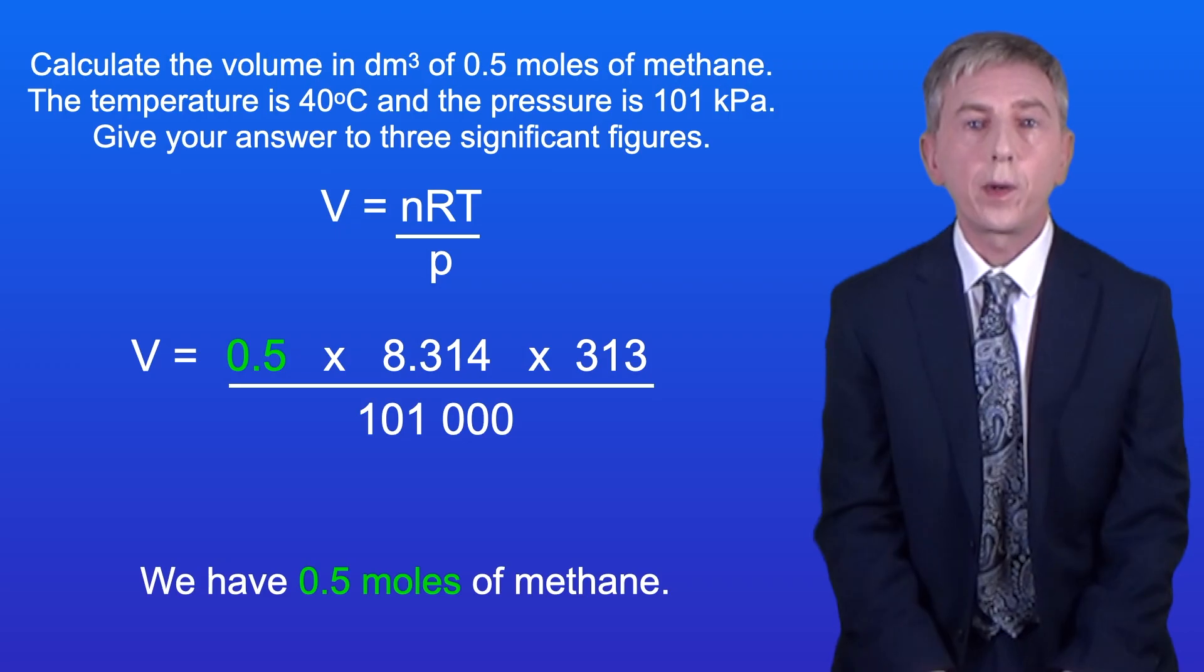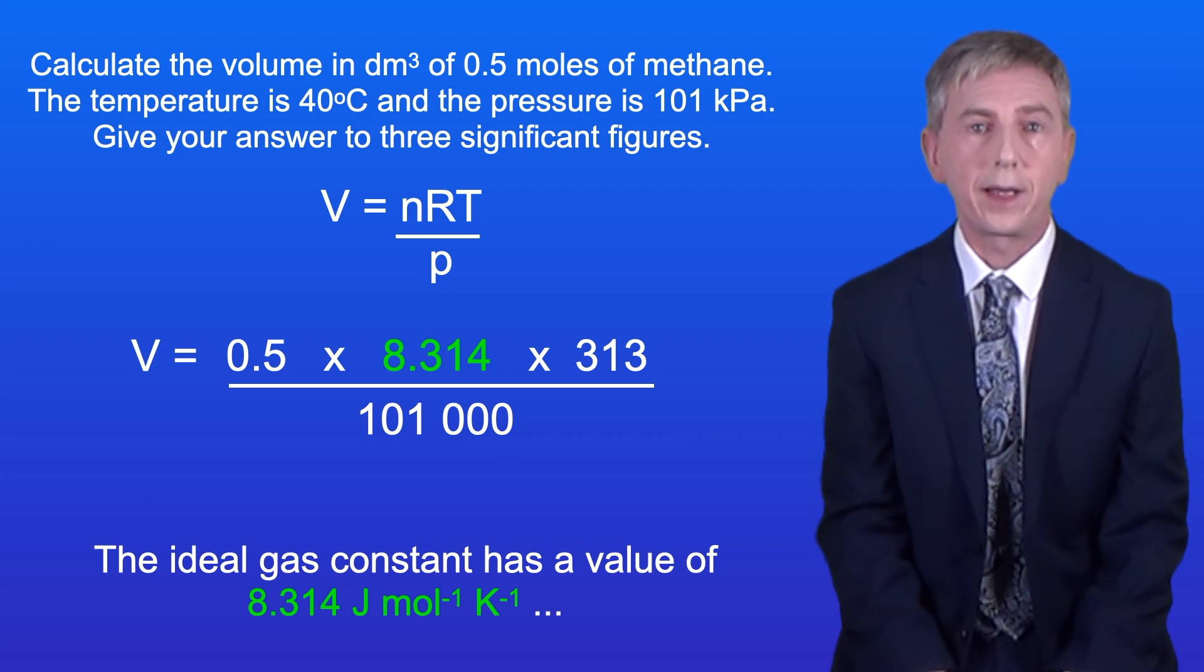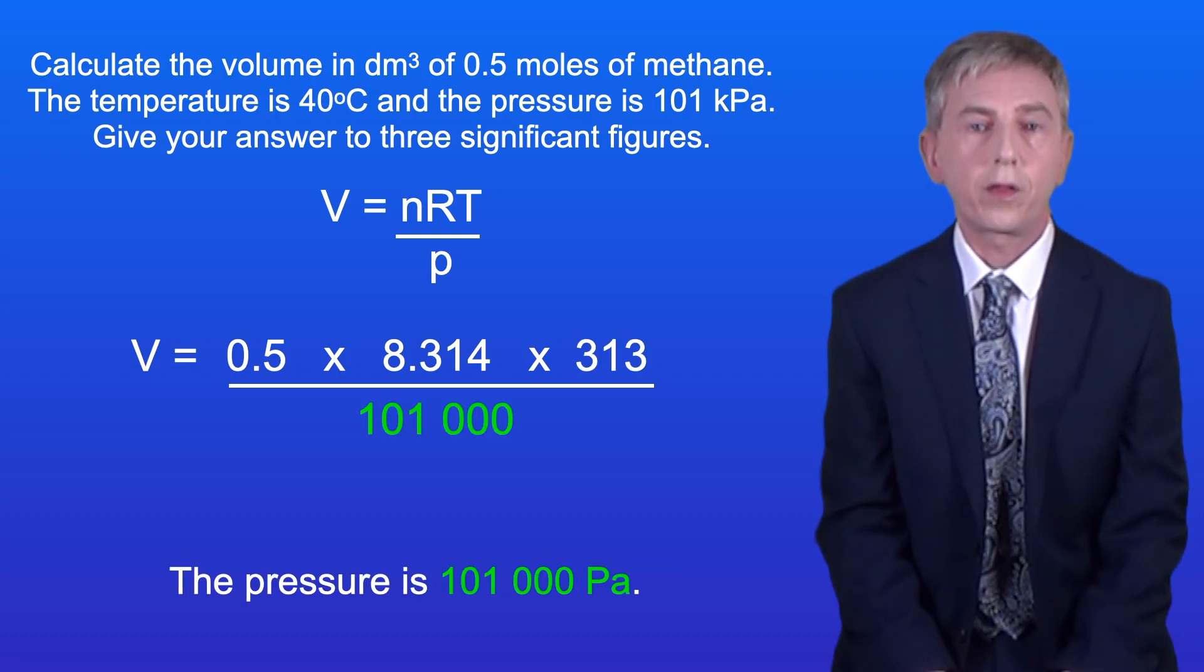We've got 0.5 moles of methane. The ideal gas constant has a value of 8.314 J mol⁻¹ K⁻¹ and the temperature is 313 kelvin. The pressure is 101,000 pascals.